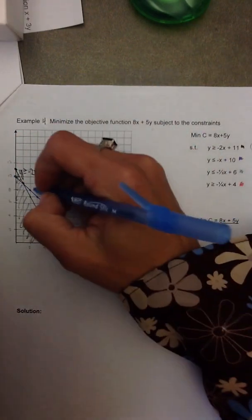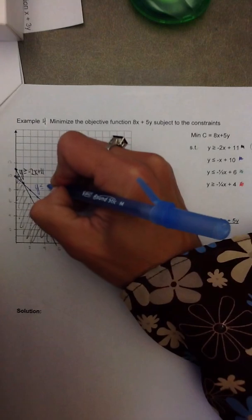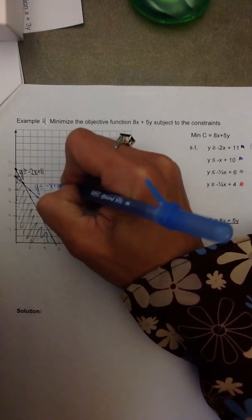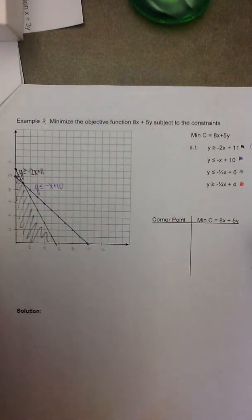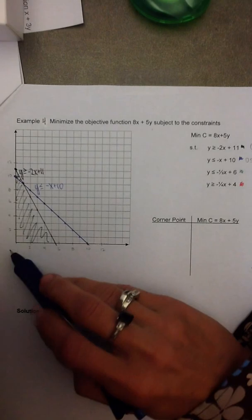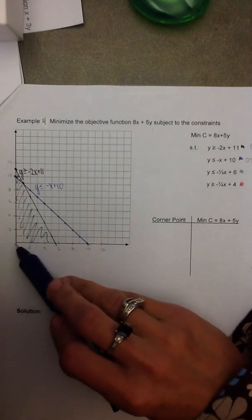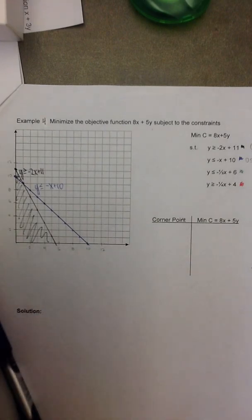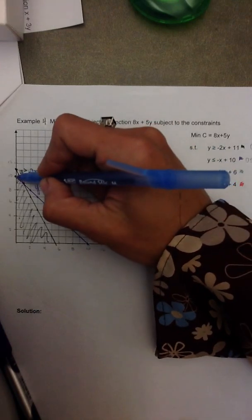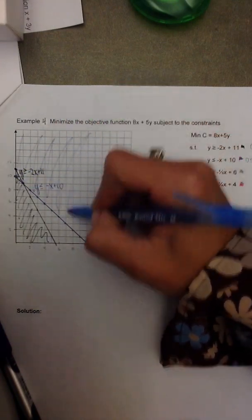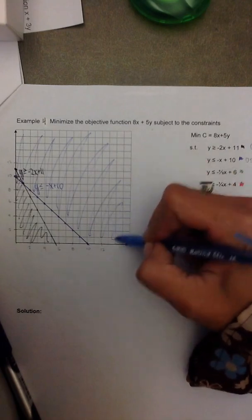And I'm going to label this inequality as y is less than or equal to negative x plus 10. And then I'll choose a test point, again of 0,0. So that gives me 0 is less than or equal to 10, which is true. So the 0,0 side, or the side below the line, gives me a true statement. Therefore I'm going to cross out or shade above the line, which is the false side.